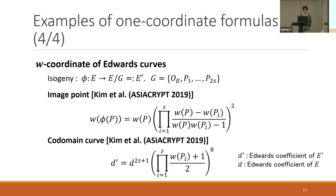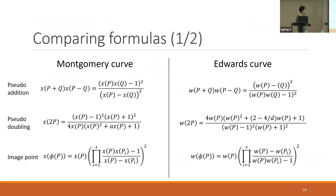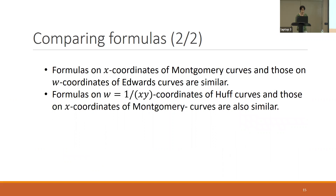You may notice these two cases have very similar formulas. The formula for the quotient curve is totally different, but addition, doubling, and image points look very similar. This is not only for Montgomery curve and Edwards curve — it also occurs for the w-coordinate of half curve and the x-coordinate of Montgomery-minus curve. The omega-coordinate of twisted Yacobi-intersection curves are also similar coordinates.